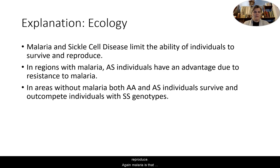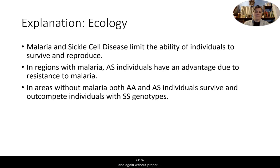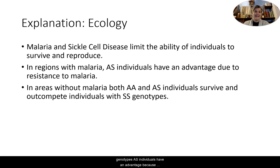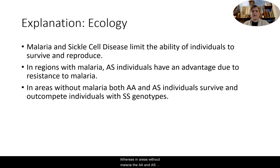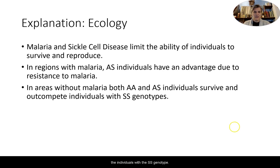Malaria is a mosquito-borne parasitic disease that affects red blood cells and can be fatal. Sickle cell disease changes the structure of red blood cells, and without proper medical treatment, it can also be fatal. In regions with malaria, heterozygous AS individuals have an advantage because of their resistance to malaria. In areas without malaria, AA and AS individuals survive and are able to outcompete individuals with the SS genotype.